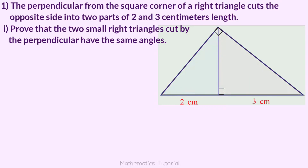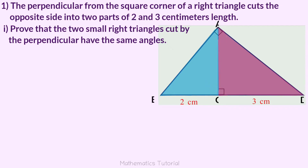Now form the two right triangles and prove they have the same angles. The points are marked A, B, C, D, E.